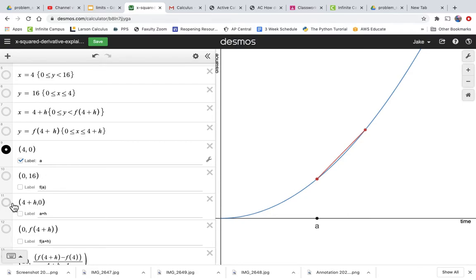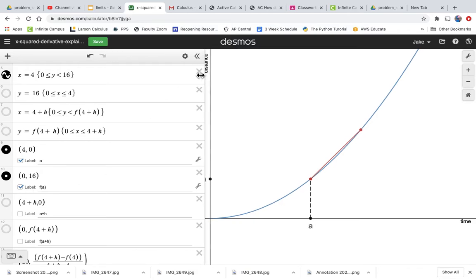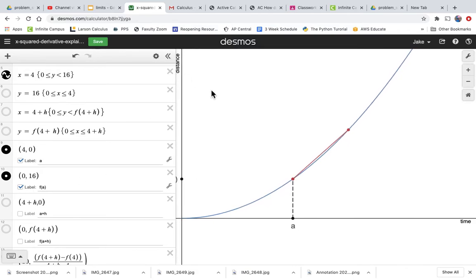And so at x value a, of course we would find out the y value of the graph, right? So f(a) would be here—we would have our f(a). Let's give ourselves a little more room here.